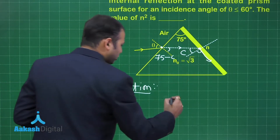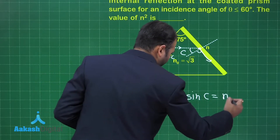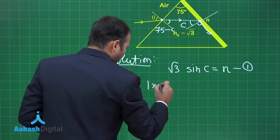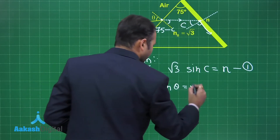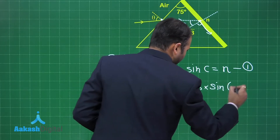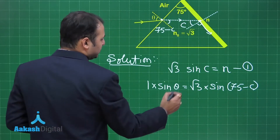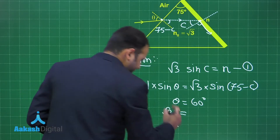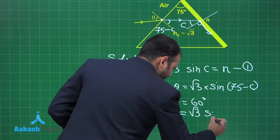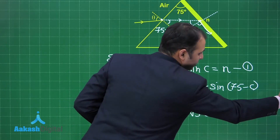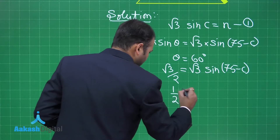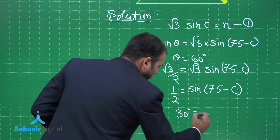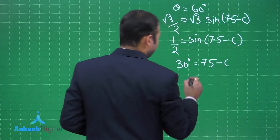Applying Snell's law at the first surface: √3 × sin C = n — this is equation 1. At the second surface: 1 × sin θ = √3 × sin(75° − C). Substituting θ = 60° as given, we get (√3/2) = √3 × sin(75° − C), which simplifies to 1/2 = sin(75° − C). Comparing, 30° = 75° − C, so C = 45°.